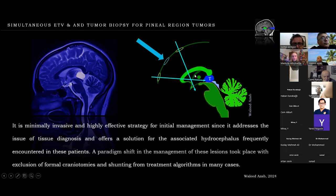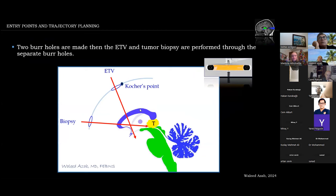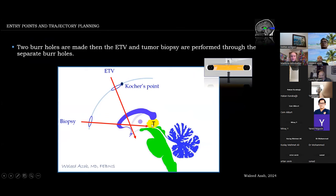It is ideal to plan the trajectory and entry point using neuronavigation. You may use a single burr hole two to three centimeters anterior to the standard Kocher's point to perform ETV and reach the tumor for biopsy. Alternatively, two burr holes can be made: the ETV performed from the standard Kocher's point and the biopsy from a more anteriorly situated burr hole. This strategy is needed when the tumor is very posteriorly recessed in the pineal region or third ventricle, or when a very large massa intermedia impedes moving the endoscope shaft.